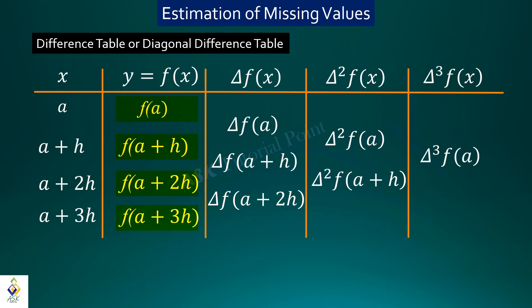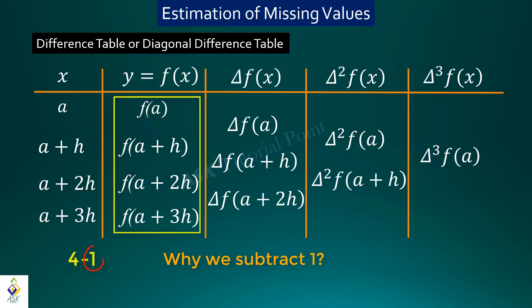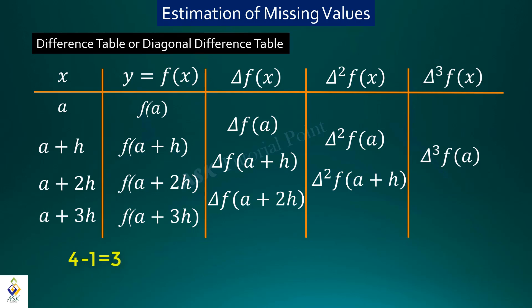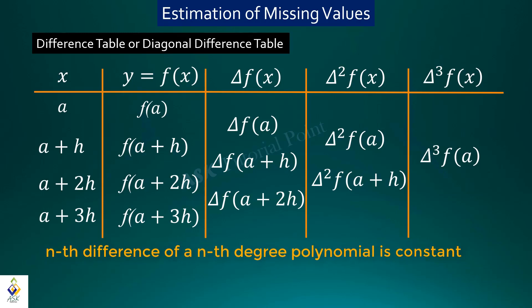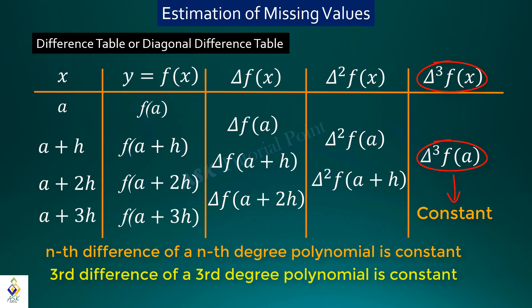How many entries are there? 1, 2, 3, and 4 — the total number of entries is 4. So we can construct the difference table up to the third order, and the third order differences are constant. According to the Fundamental Theorem, the third difference of a third degree polynomial is constant, and higher order differences are zero. So I assume this function is a third degree polynomial.